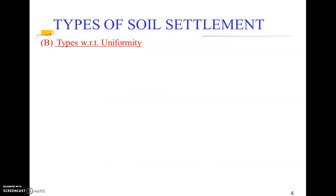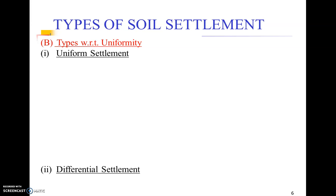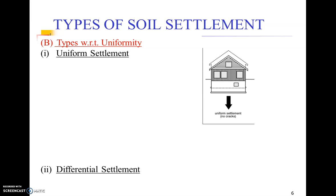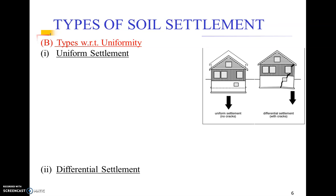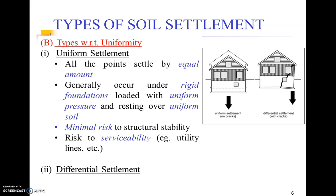We can also characterize settlements with respect to uniformity. Settlements can be uniform or differential. An example of differential settlement is the Leaning Tower of Pisa. If the entire structure moves downward with the same magnitude from all corners, it is uniform settlement. If only part of the structure settles, it is differential settlement. All points settle by an equal amount in uniform settlement, which generally occurs under rigid foundations loaded with uniform pressure resting on uniform soil.